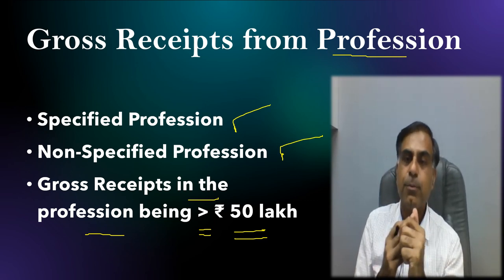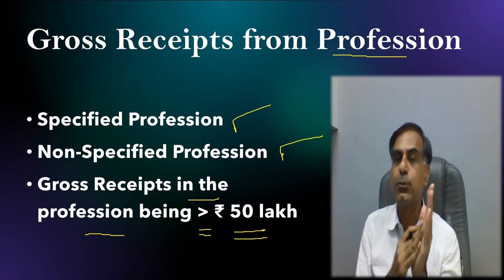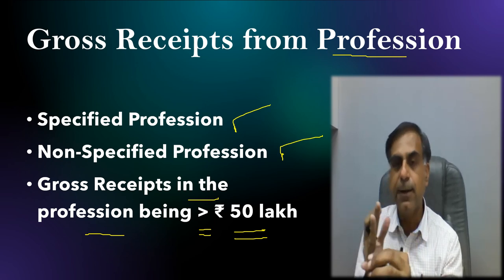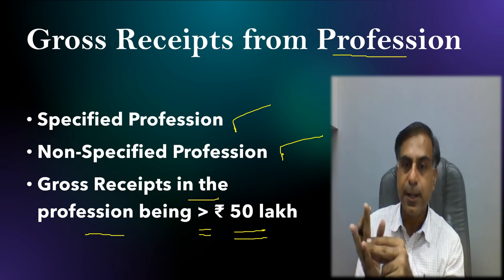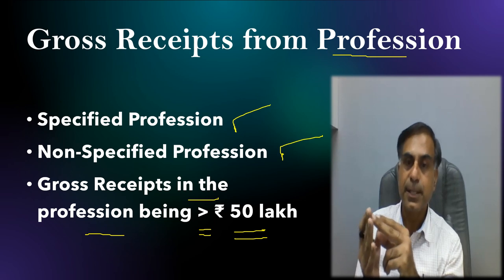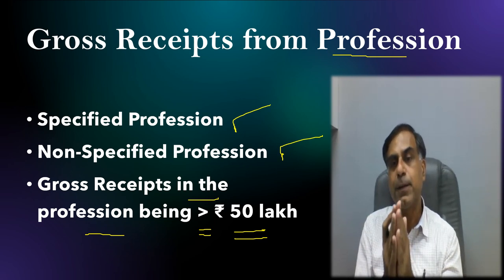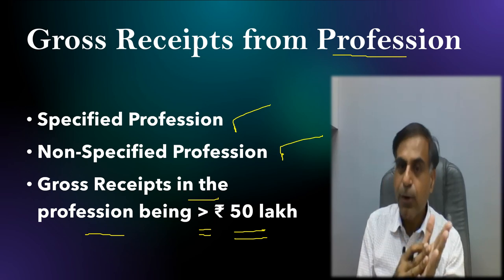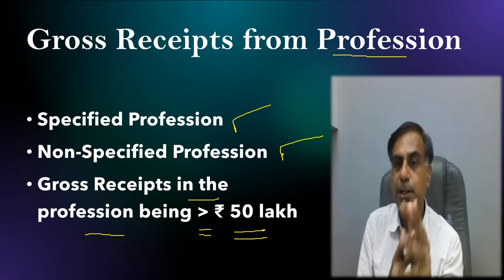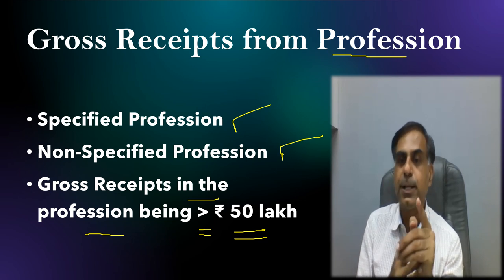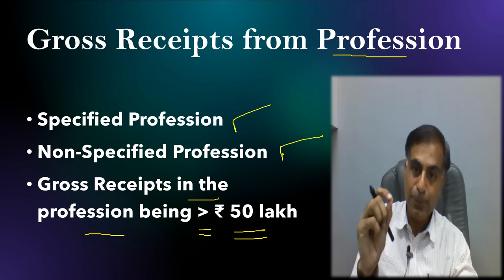A question which may come to mind is: what is a specified profession? A specified profession means a profession mentioned under section 44AA of Income Tax Act. Examples include a chartered accountant, a medical practitioner, an advocate, an interior decorator, an architect, an authorised representative, film actors and actresses, company secretaries, and other notified categories. Even a sportsman is a professional but not a specified professional under section 44AA. If the gross receipts of a sportsman exceed 50 lakh rupees, he or she is liable to get their books of account and documents audited.